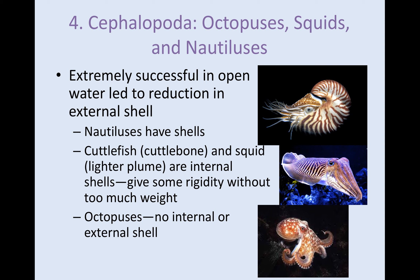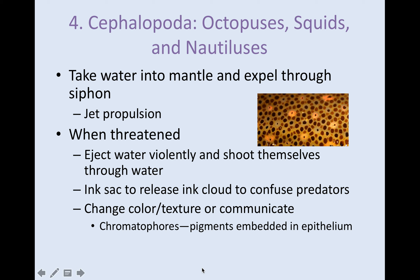Cephalopods are extremely successful in open water, which has led to the reduction of their external shell. The nautilus still has a shell. Cuttlefish and squid have some rigidity with internal shells — reduced to a pen-like structure. Octopi have no internal or external shell. They move by jet propulsion: taking water in through the mantle and expelling it through the siphon. When threatened, they can eject water violently to shoot themselves through the water. They have an ink sac that releases an ink cloud to confuse predators. Camouflage structures called chromatophores are pigments embedded in the epithelium that can change color and texture, and may also be a way to communicate with other organisms.